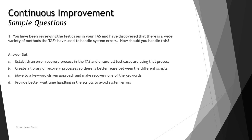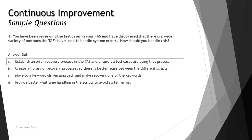Option D: provide better wait time handling in the scripts to avoid system errors. The scenario never speaks about the issue of wait time, so this is not a relevant option. Therefore, the right answer is A — establish an error recovery process in the TAS and ensure all test cases are using that process.